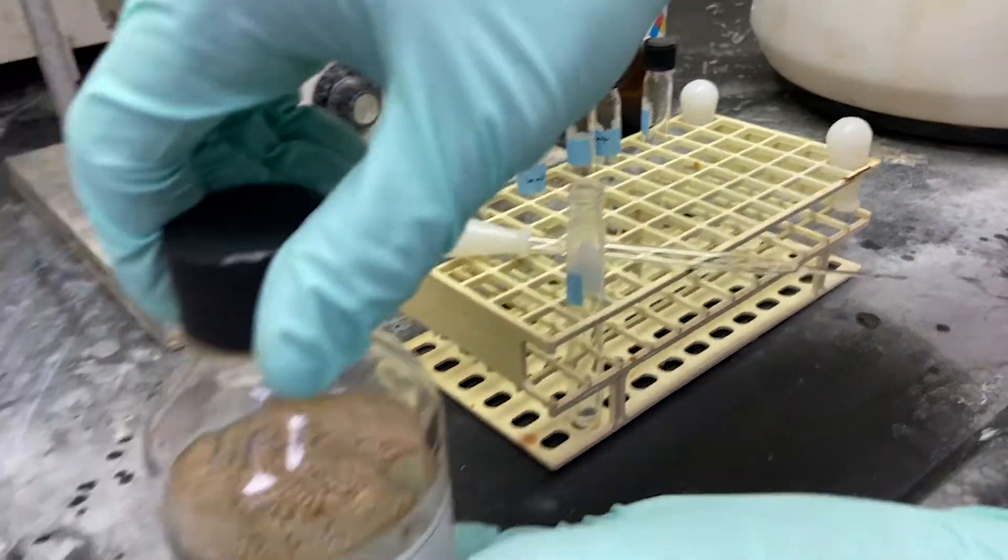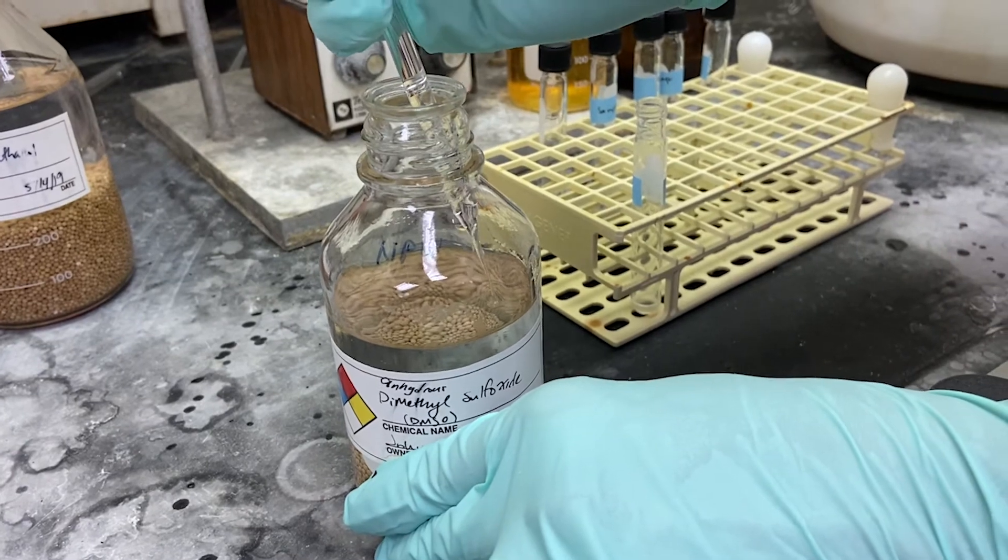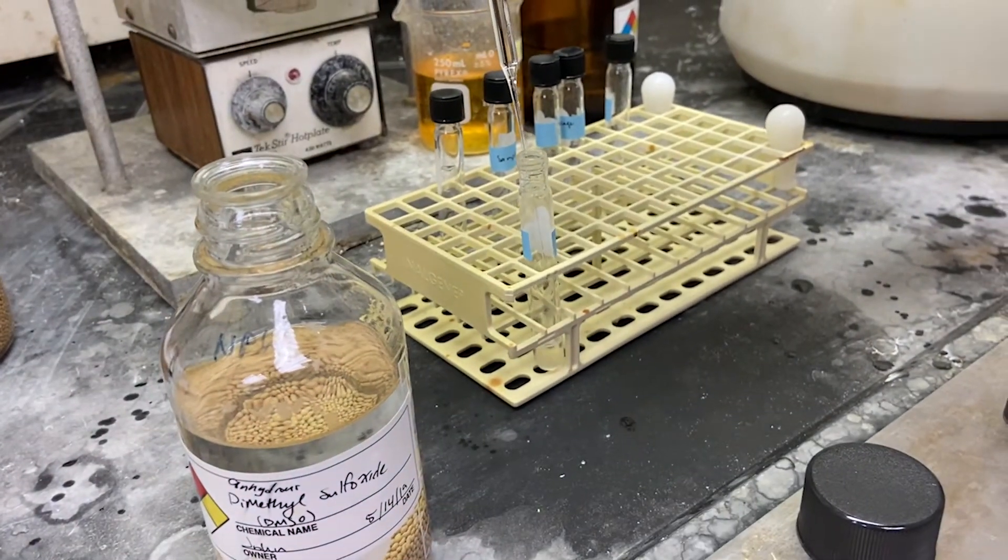After the final wash, we add two milliliters of DMSO to the base solution and vortex this solution and the base is now ready to be added to the sample.